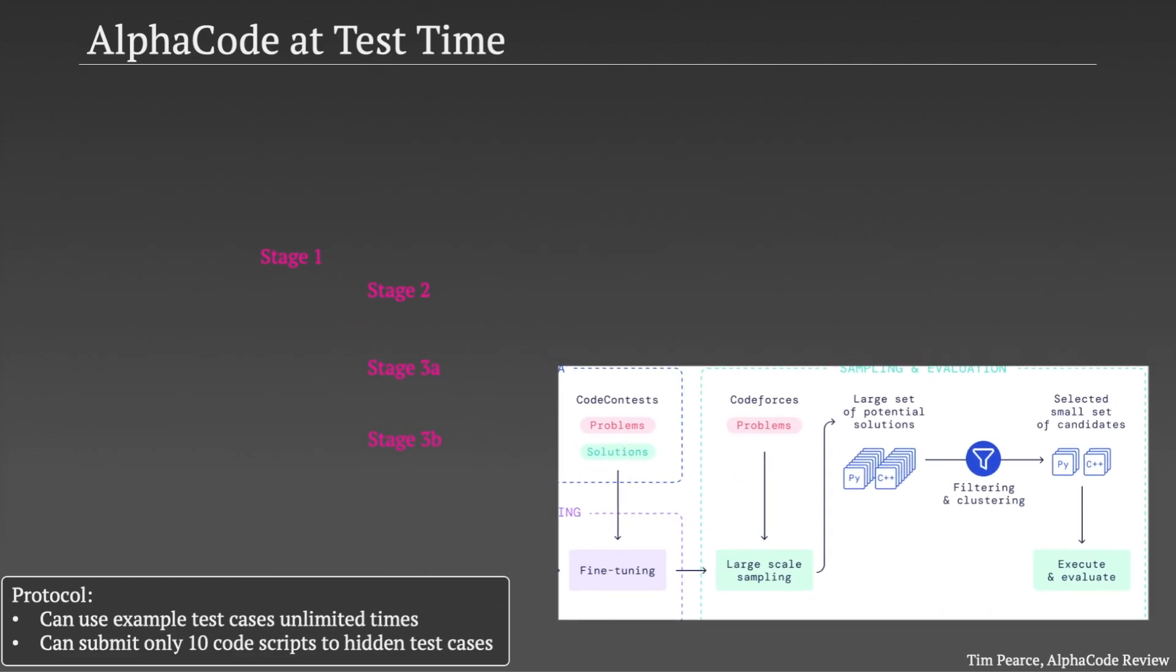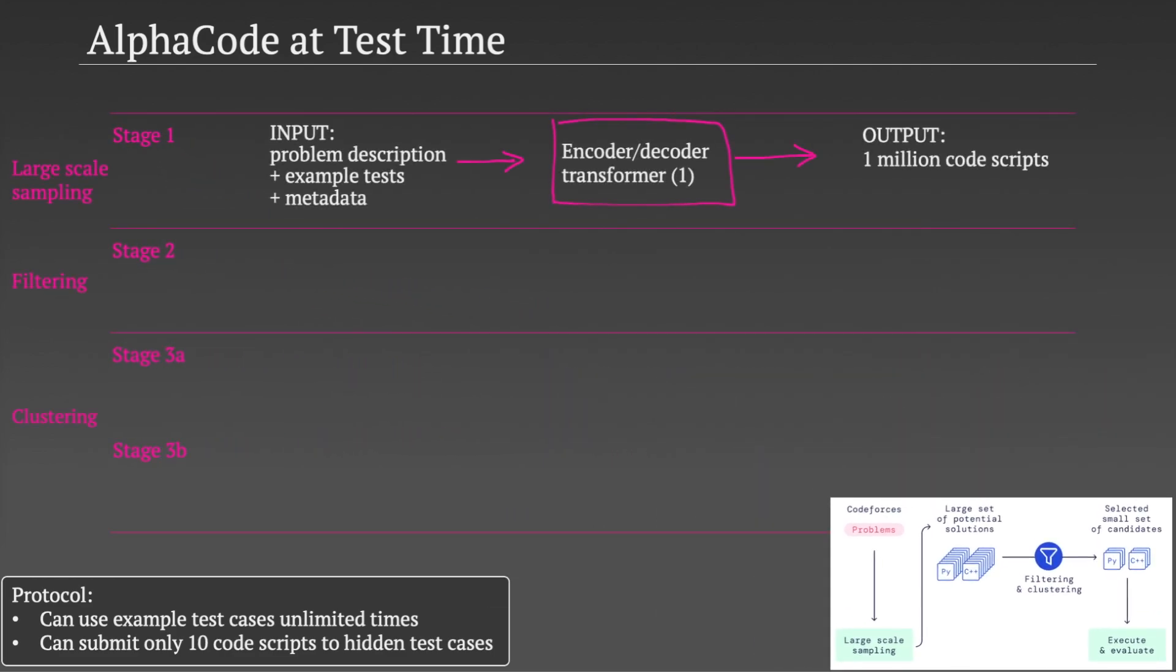In stage one, they use a large transformer model that takes as input the problem description, example tests, and some metadata about the problem, all in a single string. They then sample from this model to generate a huge number of potential solutions. The reason they start with so many is that most of these scripts will fail. Some won't even compile. So stage two and stage three are ways to reduce this large pool of one million potential scripts to select 10 that they think might work.